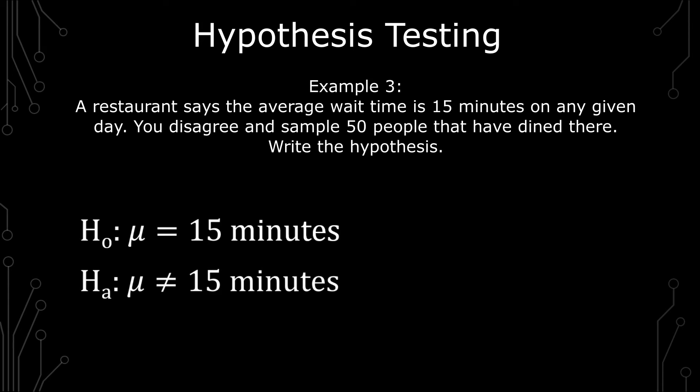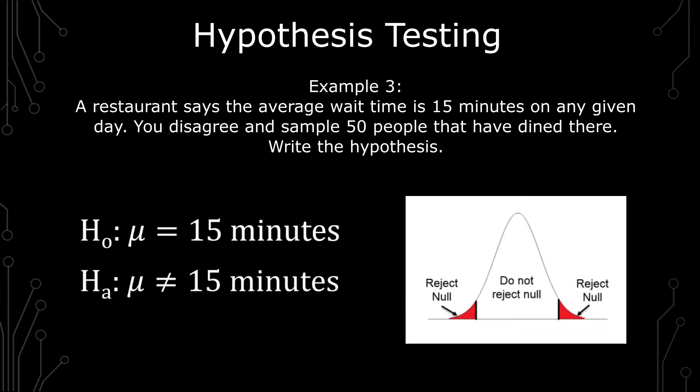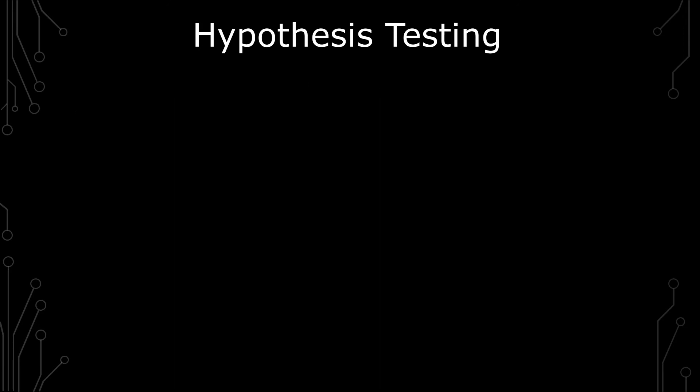Notice here we're using mu because it's not a probability. We're talking about a standard of measurement that is outside of a percentage. This is also a two-sided test. And a two-sided test shows a difference if it's greater than or less than. So it could be 13 minutes. It could be 17 minutes. So that's how you write the different forms of hypotheses.